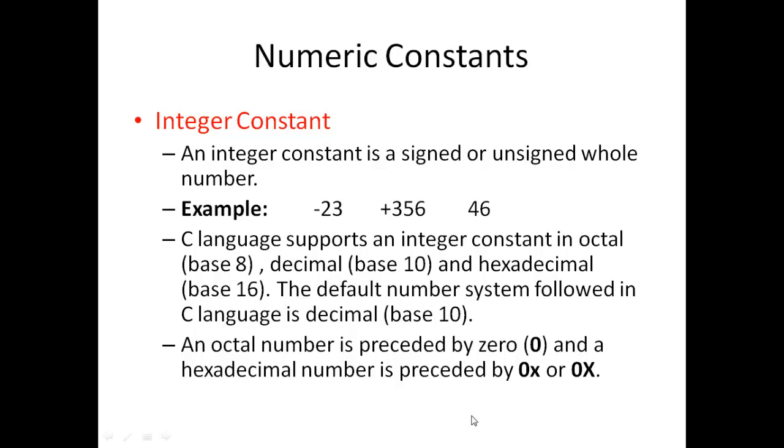For octal numbers you need to make a zero before your number starts, and hexadecimal is preceded by 0 with small x or 0 capital X.